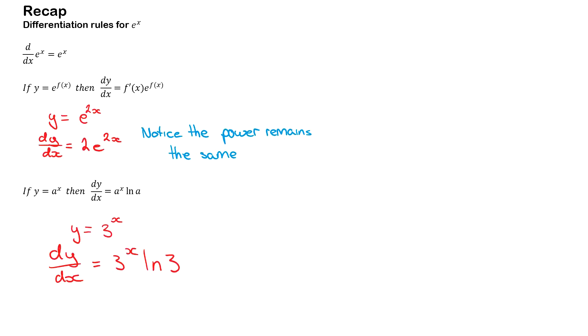To end the video, we'll do a quick recap. Remember, if you're trying to differentiate e^x, it remains as e^x. Now when you're differentiating e to the power of something else such as 2x, you differentiate your function first. So you differentiate 2x to get 2. It comes out the front as a coefficient. And then you're left with e to the power of 2x. So again, the power remains the same. Now when you're differentiating a different base, such as 3^x, when you differentiate it, you get 3^x natural log 3.